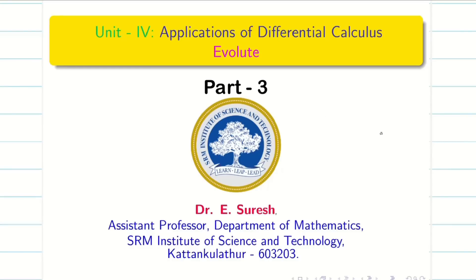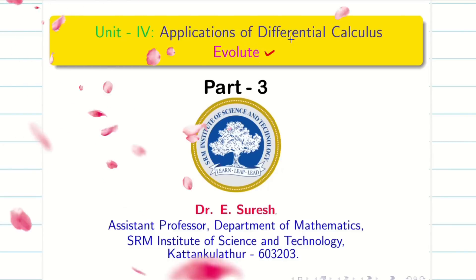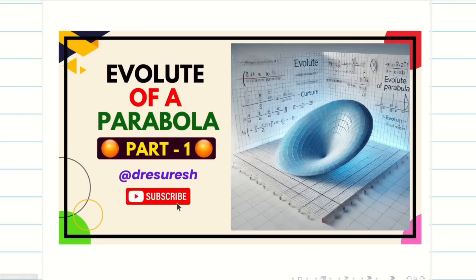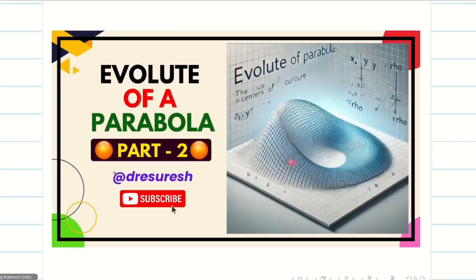Dear students, welcome to the problem solving session on Evolute, part 3. In part 1, we gave the basic notations and formulas, then solved a problem finding the evolute of the parabola y² = 4ax. In part 2, we solved the problem for finding the evolute of x² = 4ay. Those who haven't watched those videos, go to the playlist and watch them before continuing.